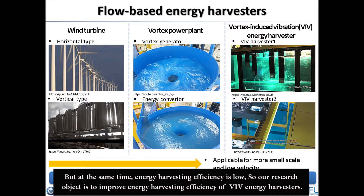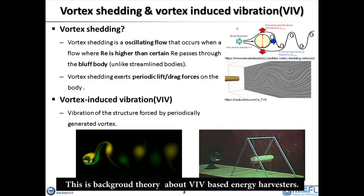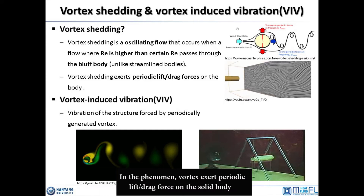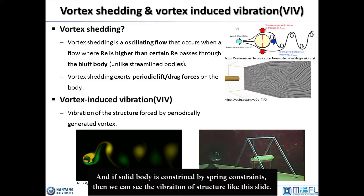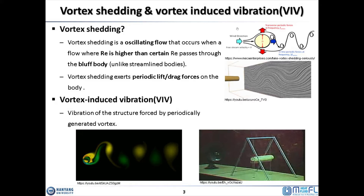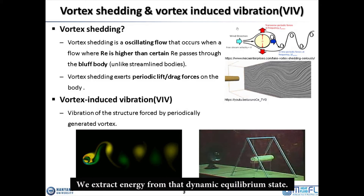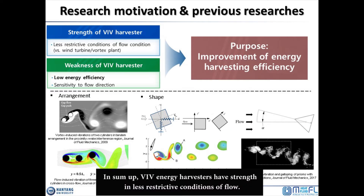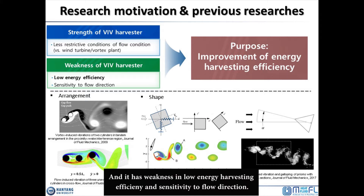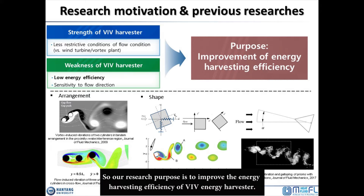Our research objective is to improve the energy harvesting efficiency of the VIV energy harvester. Vortex shedding is a well-known phenomenon in fluid dynamics: vortices exert periodic lift and drag forces on a solid body. If the solid body is constrained by spring constraints, we can see vibration of the structure. We can observe the cylindrical movement from the transient state to the dynamic equilibrium state, and we extract energy from that dynamic equilibrium state. In summary, VIV energy harvesters have strength in less restrictive flow conditions, but weakness in low energy harvesting efficiency and sensitivity to flow direction.